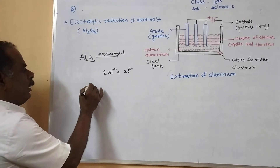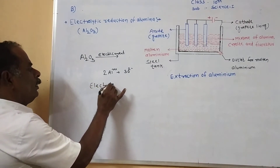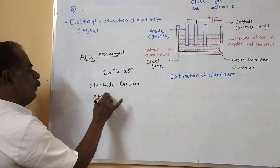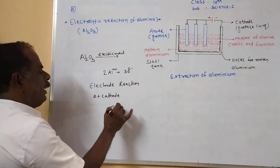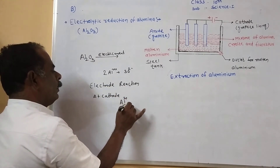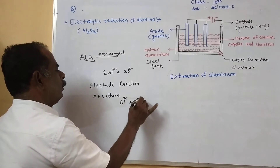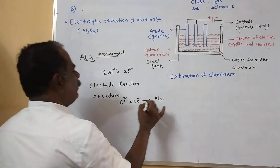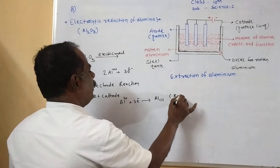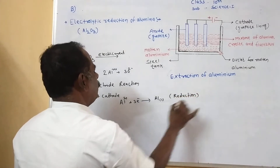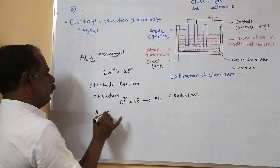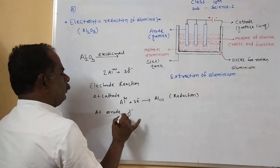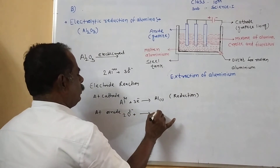The electrode reactions that take place are as follows. At the cathode, aluminium ions are attracted and aluminium accepts electrons and is deposited at the bottom — this means reduction takes place at the cathode. At the anode, oxygen ions lose electrons — oxidation takes place at the anode.